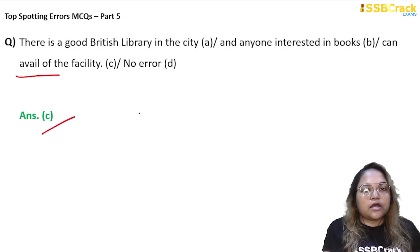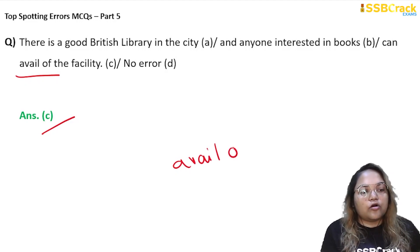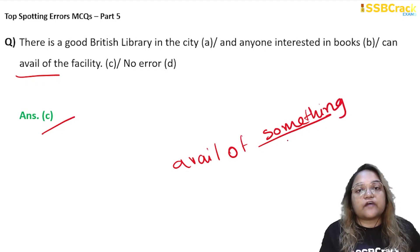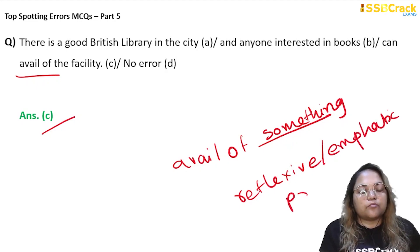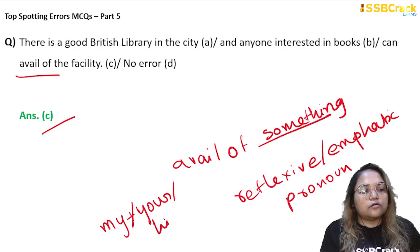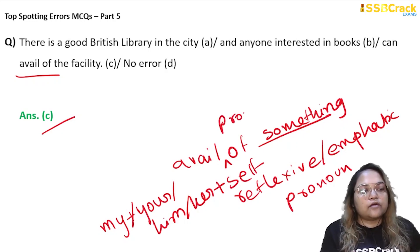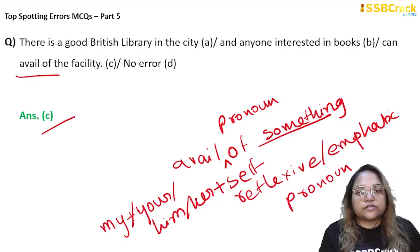The error is in part C. When you use the term 'avail of some facility,' the pronoun for the person availing should not be in objective or subjective format — it should be in reflexive or emphatic pronoun format. So whatever pronoun you are using — myself, yourself, himself, herself — you use it with 'self.' So it should be: avail myself of the facility, or avail yourself, or avail herself of the facility.